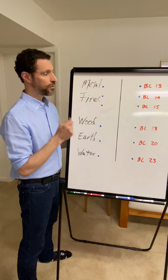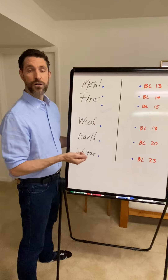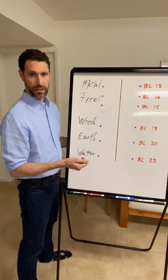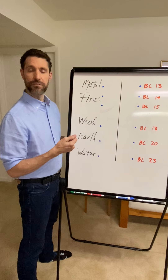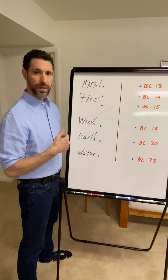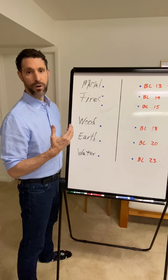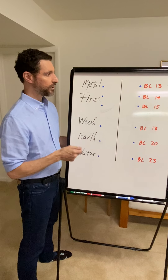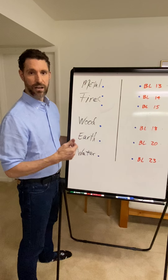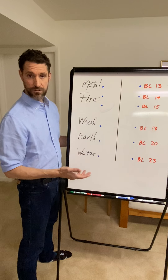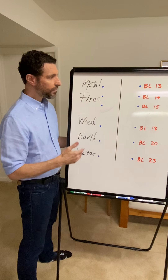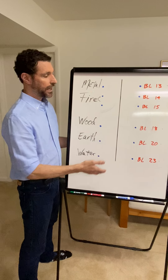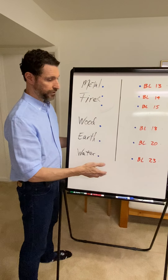We would use these points on the back for the relatively yin organs — the zhang organs. The zhang have a tendency to store, which means they are prone to a specific type of stagnation, generally of Qi and blood and also the fluids, which are relatively yin.